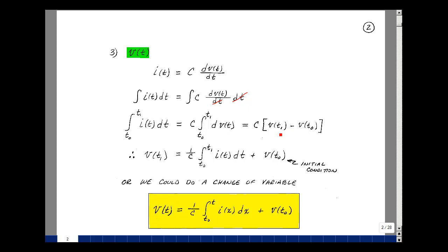Let's now solve for V of T1. Divide by 1 over C. It's this term. And bring this on the other side of the equation. The voltage across the capacitance at some time T1 in the future is 1 over C, the integral from T0 to T1 of I of t dt, plus the value of the capacitor voltage at T0. We call this an initial condition.